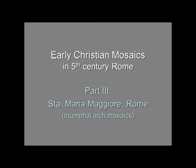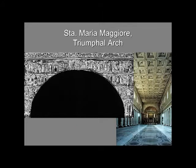Now we want to look at the mosaics on the triumphal arch — the arch that separates the nave from the apse or the sanctuary. This is Santa Maria Maggiore. Unfortunately I have a black and white image of the overall thing, but we're going to look at some of the details.